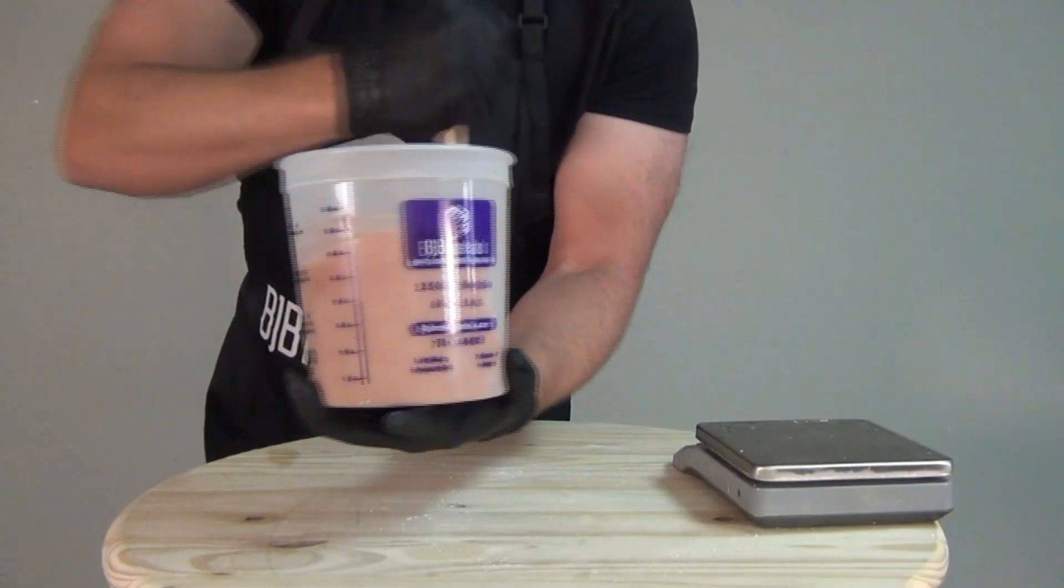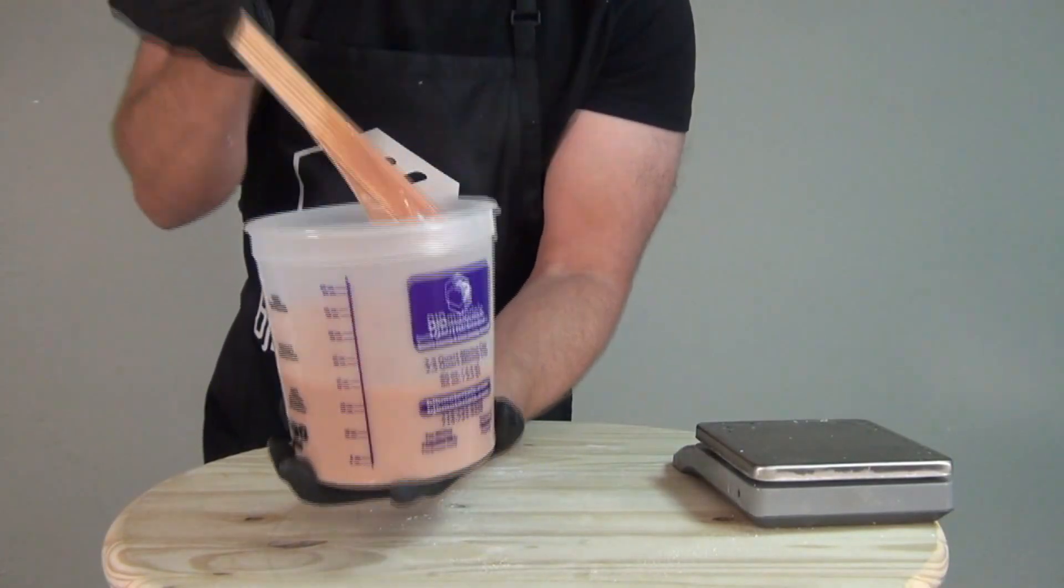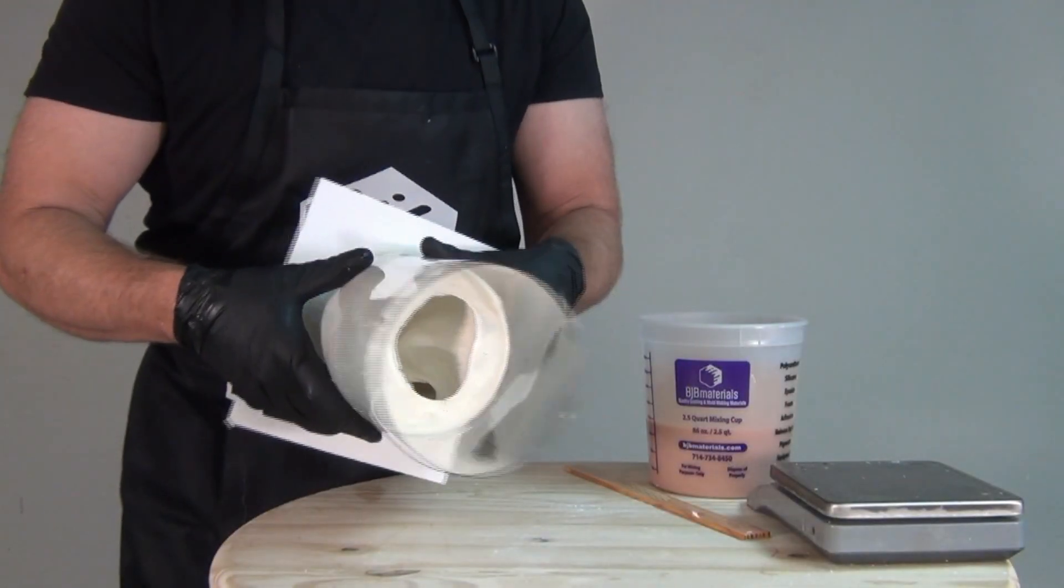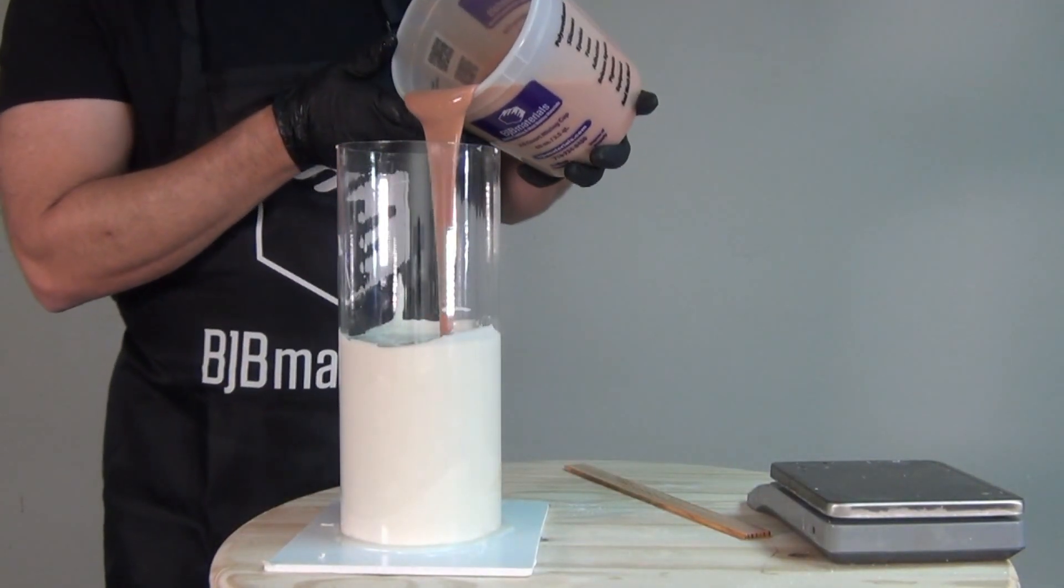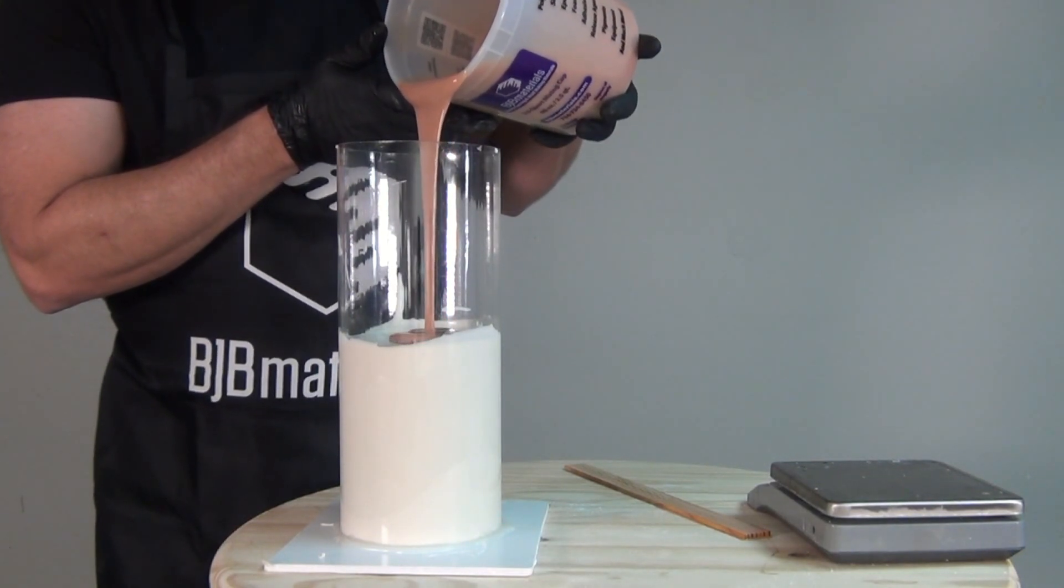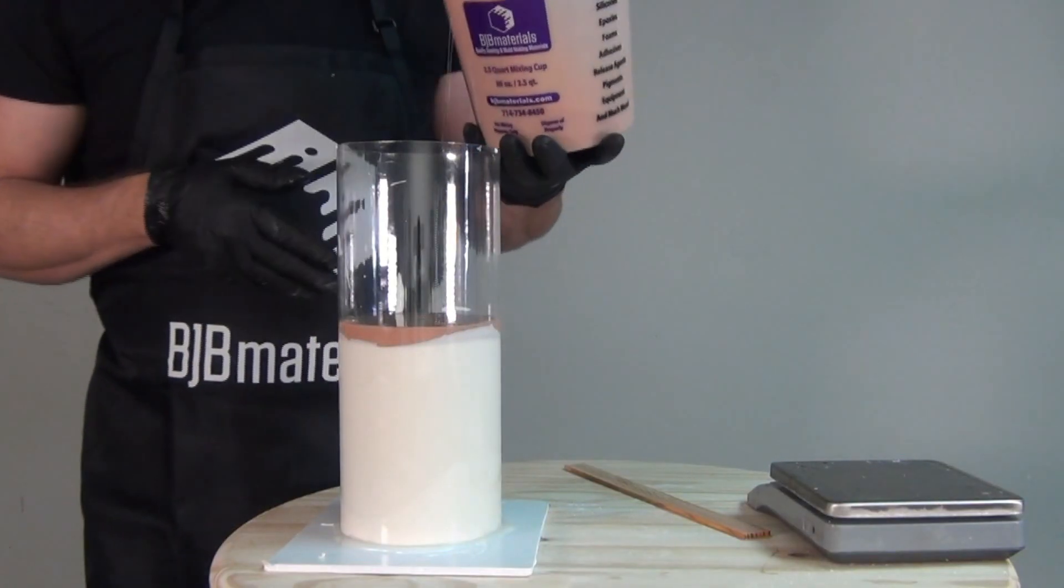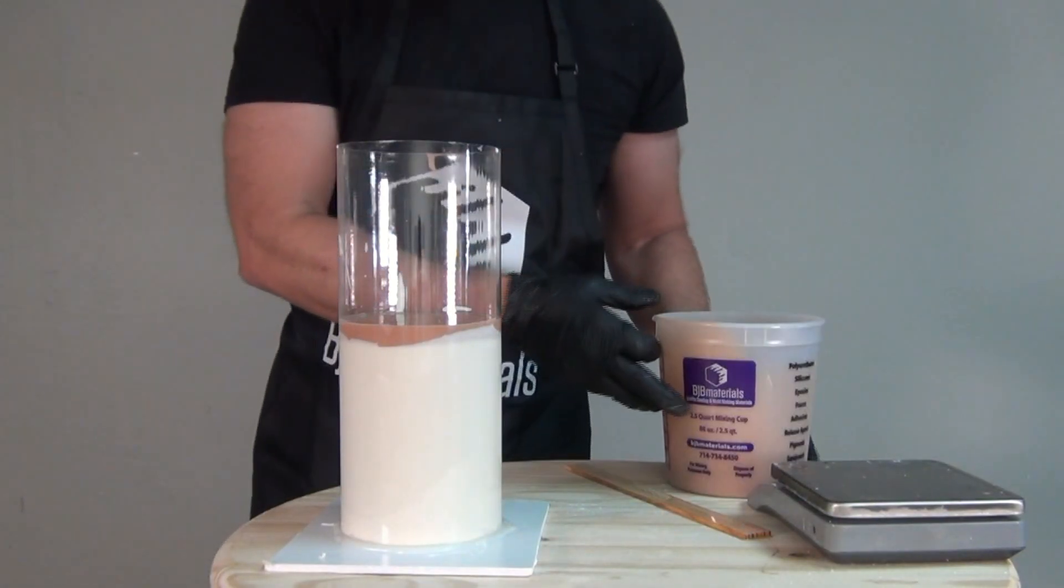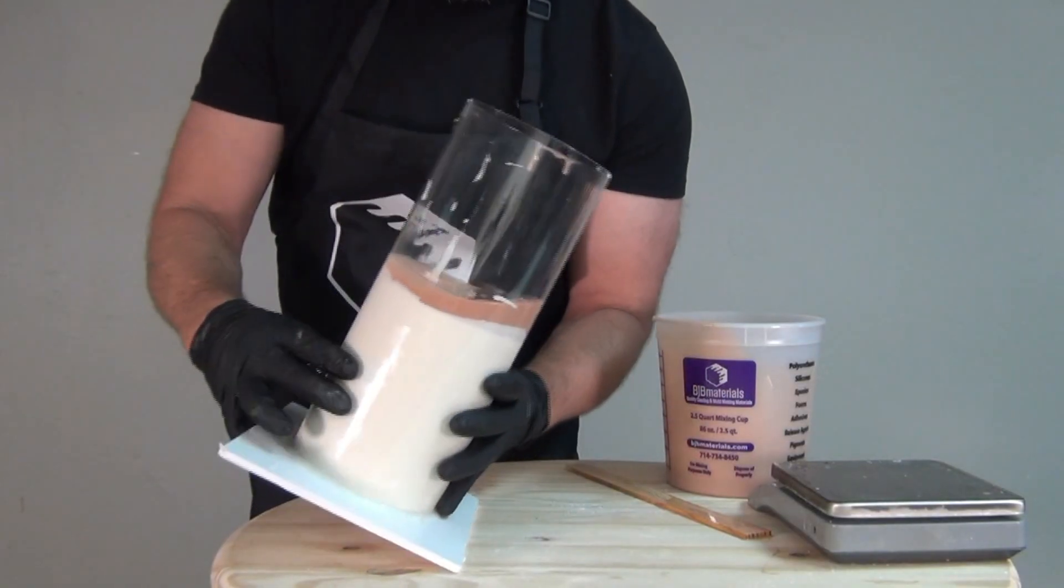It has about a six to eight minute working time at room temperature and then about a one hour demold. And that's important because the lifespan of an alginate mold like this, especially in the summertime, is pretty short. Typically, you get accurate results out of an alginate mold within the first maybe two or three hours of making that mold. And the hotter and drier it is, the faster that mold will degrade and start to dry out. So you want to make sure you're ready to use that mold as soon as possible to get the most accurate results.